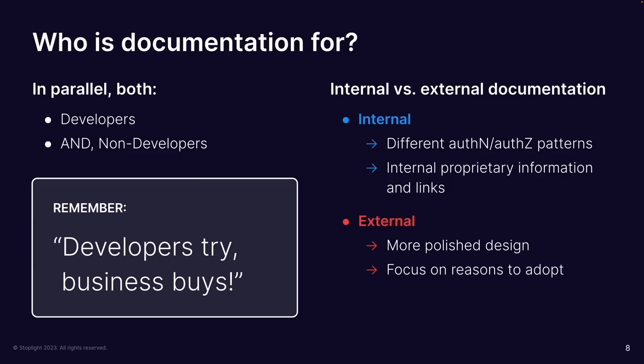When you use an API, you're in essence building a relationship with another company. You have a very narrow window of attention — a developer will go try it, see how it works, and make a judgment call. Documentation is the first thing they'll interact with, so it's critical to capture their imagination and confidence quickly. It's important that we speak in two voices to address both audiences.